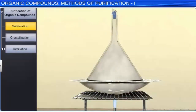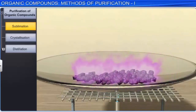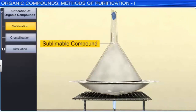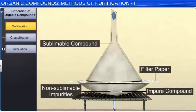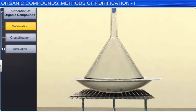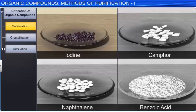Sublimation technique is used to purify sublimable solid organic compounds. Sublimation is a process involving the conversion of a solid directly into vapor without any intermediate liquid state. The impure substance is heated in a dish covered with a perforated filter paper, over which an inverted funnel is placed with its stem plugged with cotton. Vapors of the solid pass through the holes in the filter paper and condense on the cooler walls of the funnel, while non-volatile impurities remain in the dish. Iodine, camphor, naphthalene, and benzoic acid are purified by this method.